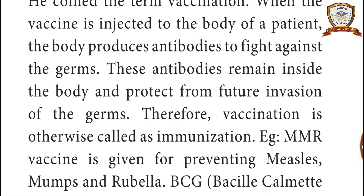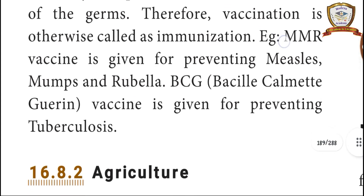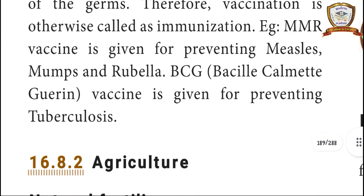Example: MMR vaccine is given for preventing measles, mumps, and rubella. BCG vaccine is given for tuberculosis.